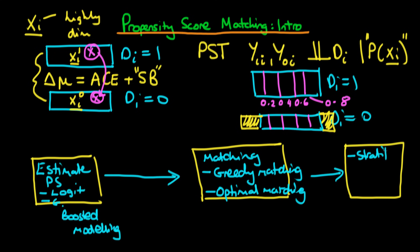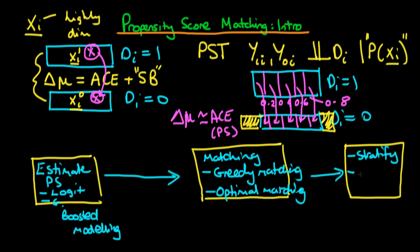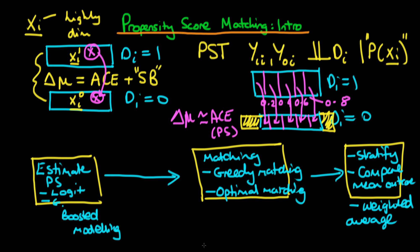After stratification, we compare the mean level of the outcome variable within each strata for the treated and untreated cases. For each of the strata, we calculate the difference in means of the outcome variable, which gives us an estimate of the average causal effect conditional on the propensity score within that particular stratum. We then take a weighted average of the strata mean differences across all different strata, and this weighted average estimates the average causal effect across the entire sample.